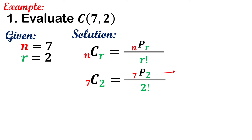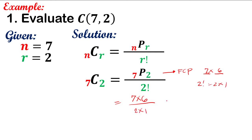Using the fundamental counting principle, P(7,2) means 2 slots: the first slot has 7 options, then the next has 6. So 7P2 equals 7 times 6. We have 7 times 6 over 2 factorial, which is 2 times 1. Simplifying: 6 divided by 2 is 3, so we have 7 times 3, which is 21. The combination of 7 things taken 2 at a time is 21.